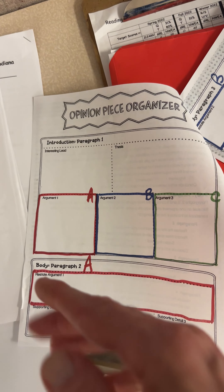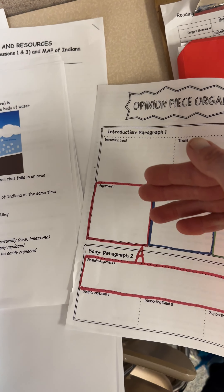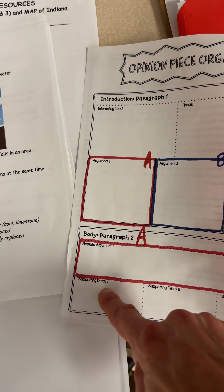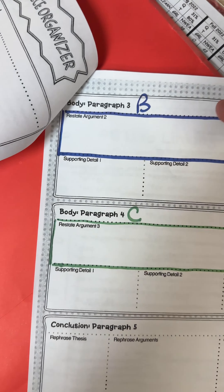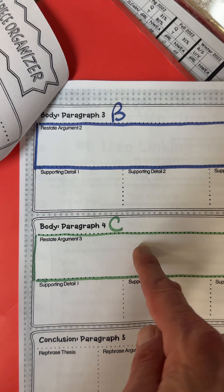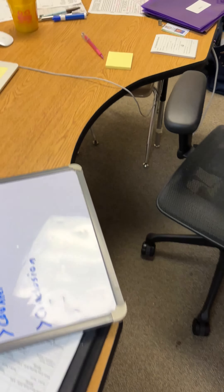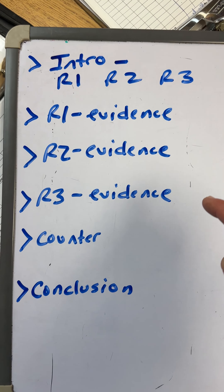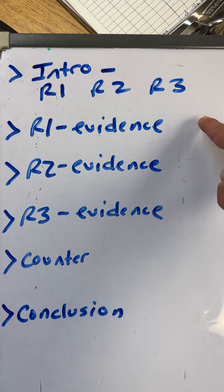Go ahead and remember to get that packet out that we've been working on — the packet that looks like this. If we open it up, we've got our introductory paragraph with our three reasons. We talked about putting that first, next, and blank there. Then we go down and we have our first reason with evidence and explanation, our second reason with explanation, and our third reason with explanation.